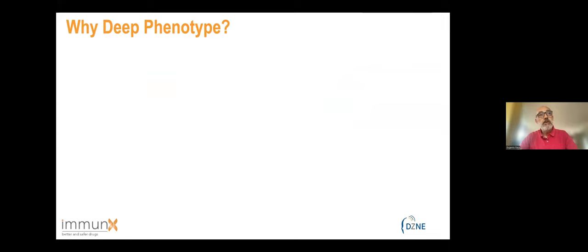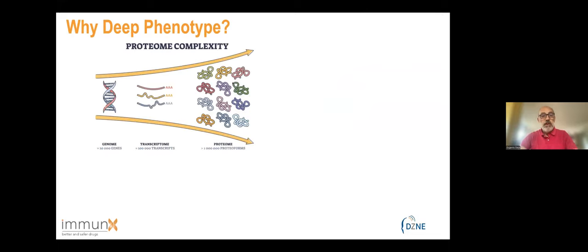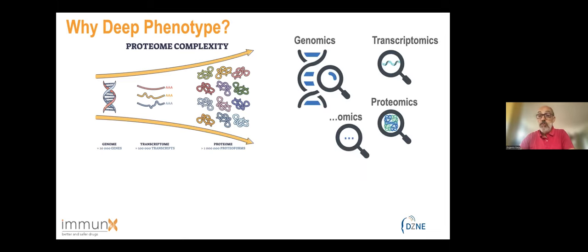Why deep phenotype? When I became aware of Target 2035, I thought it was very ambitious. We have around 20,000 genes discovered, around 100,000 transcripts, and it has been estimated there are different proteoforms — meaning splicing variants, different phosphorylation, acetylation, methylation — that number reaches 1 million. So technically we have 1 million targets. And at the moment there are very good tools: we have genomics, transcriptomics, proteomics, metabolomics, and other omics.